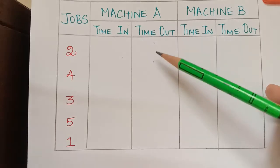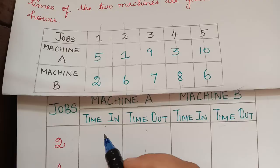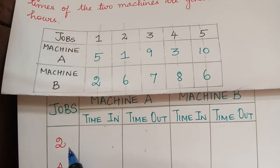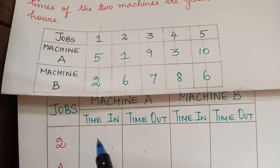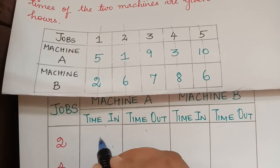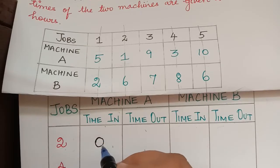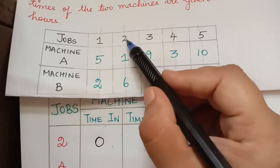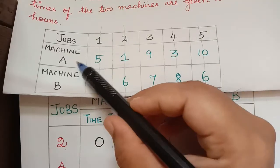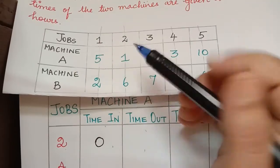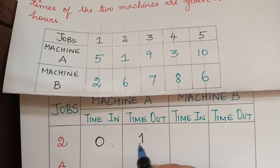We calculate the time in and time out for machine A for all the jobs. The time in for the first job is always 0. Job 2 takes 1 hour in machine A, so time out is 1 hour.